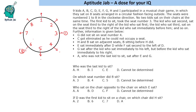The third person to sit sat on the seat third to the right of the kid who sat immediately before him. So the third person sits here. Then the fourth person sits on this seat, fifth person on this seat, sixth person on this seat, seventh person on this seat, and finally the eighth person on this seat.